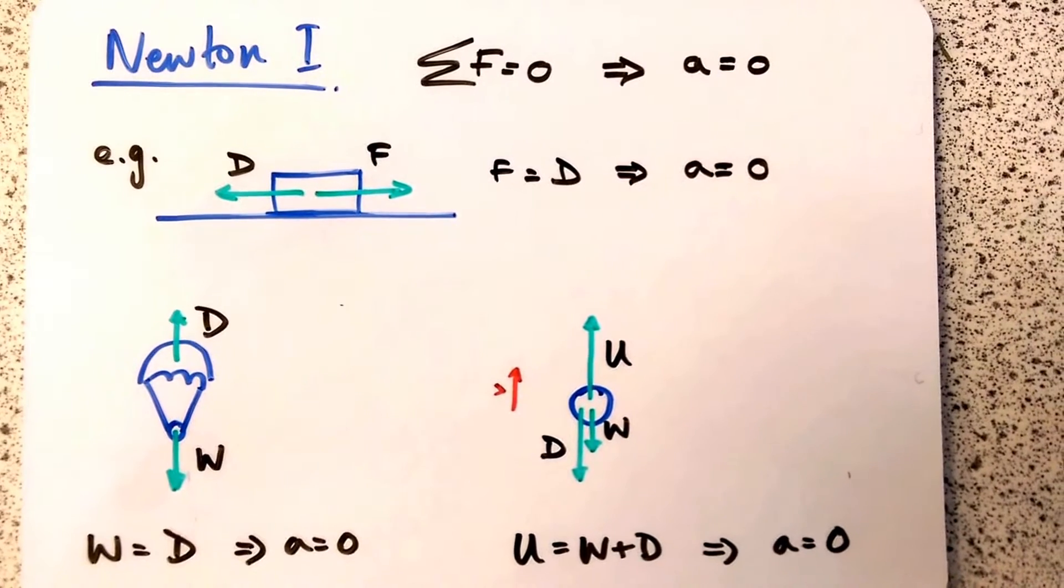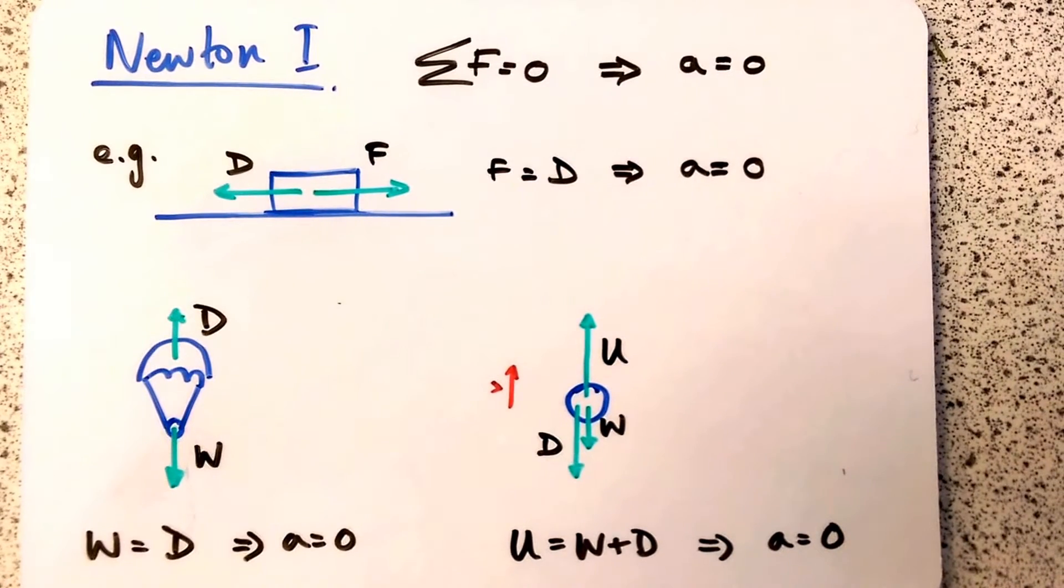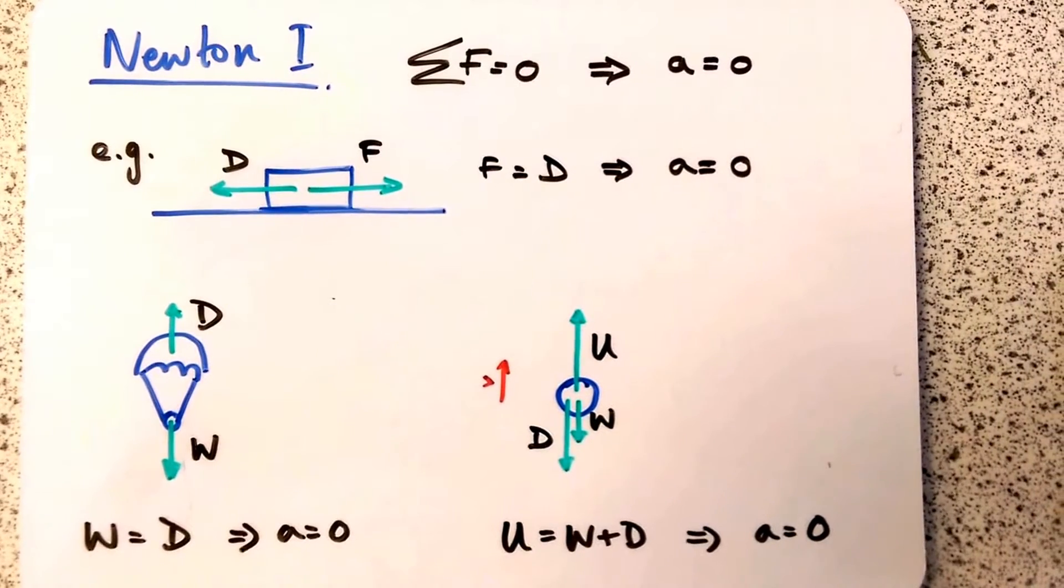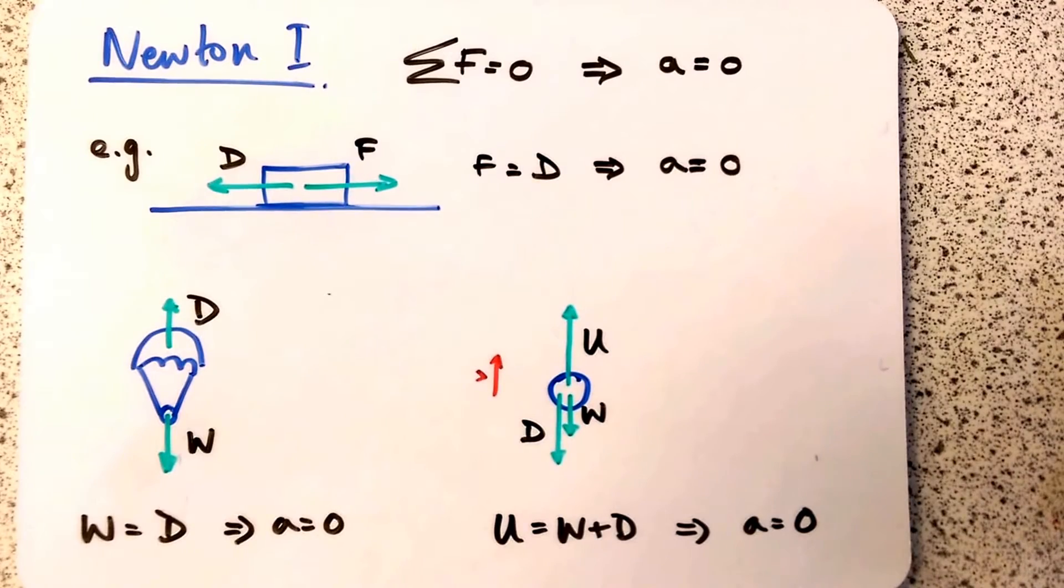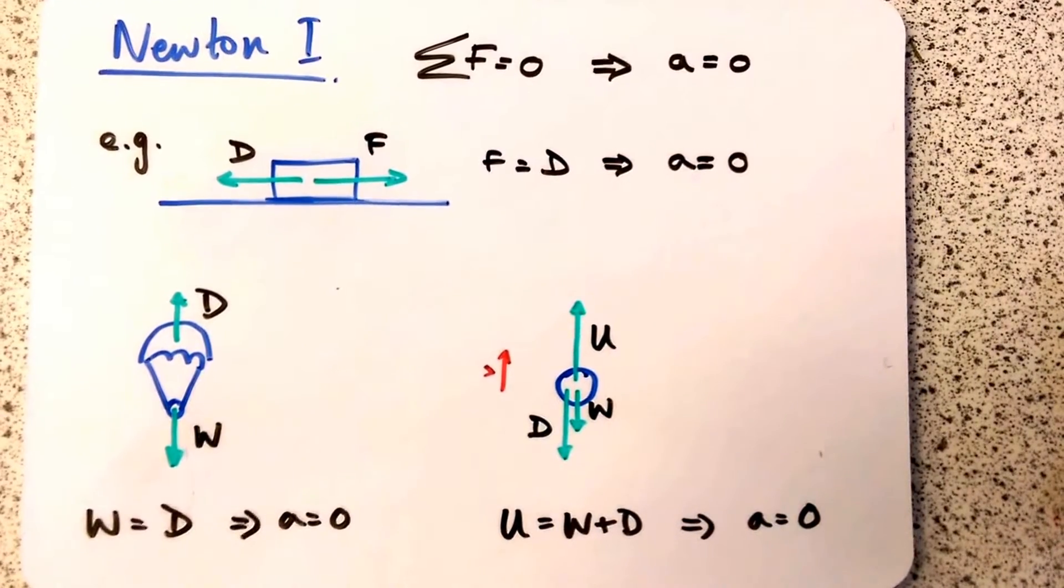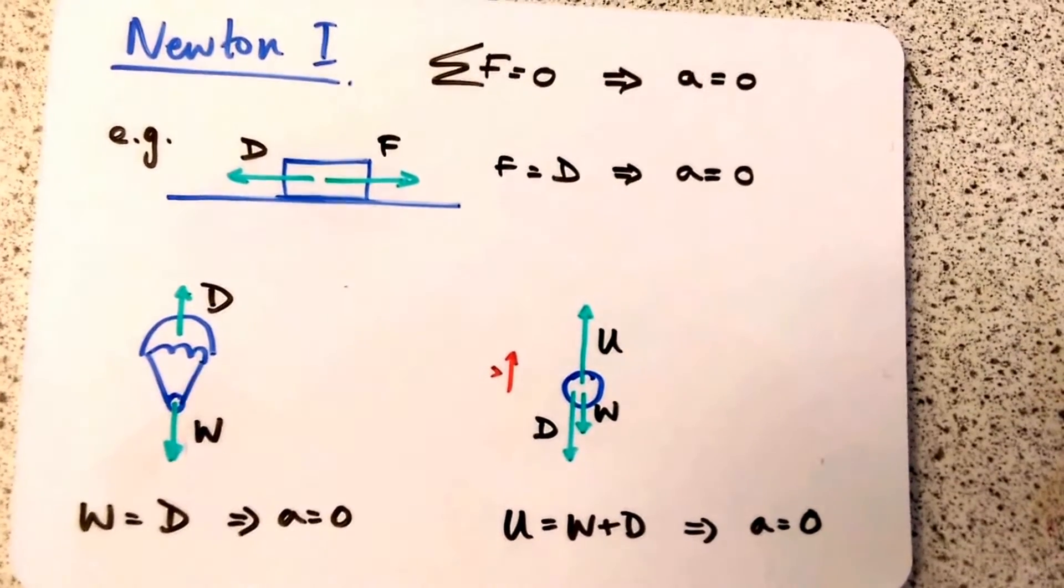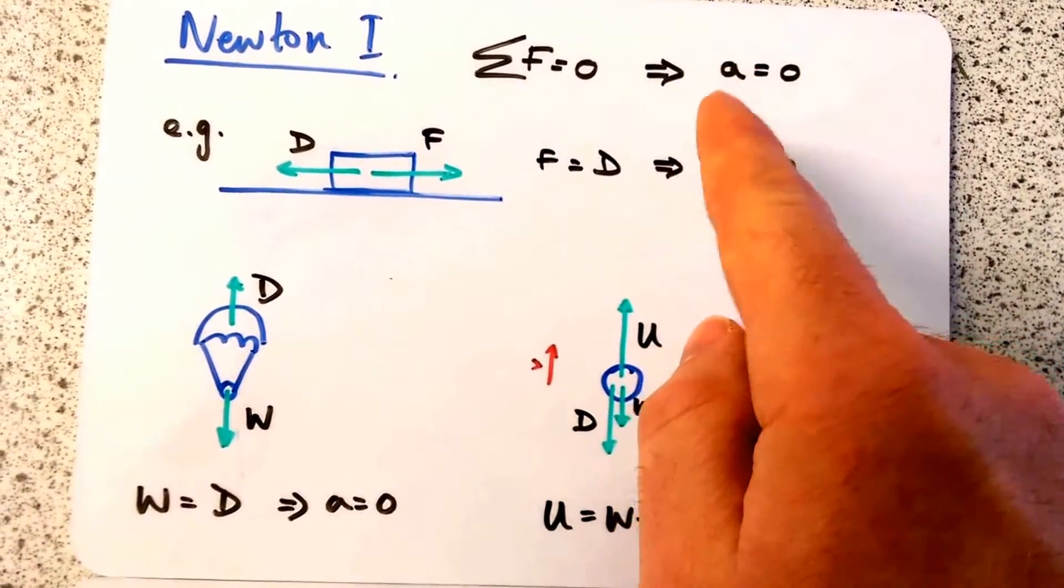Newton's first law says that if the sum of the forces is zero, if there's no resultant force, then there's no change in motion. It's often misquoted to say there is no motion, nothing can move - that's wrong. If the sum of the forces, represented by sigma F equals zero, then the acceleration equals zero.